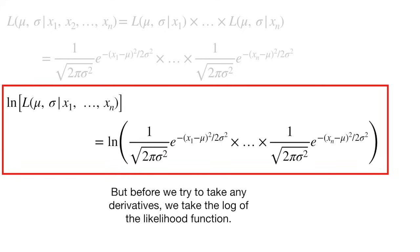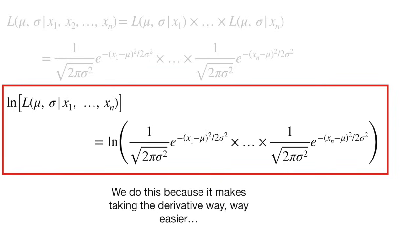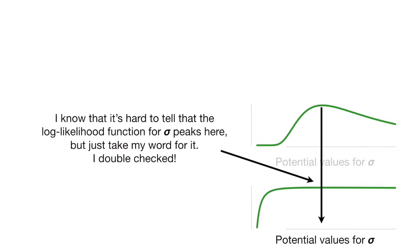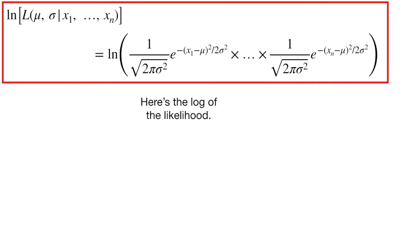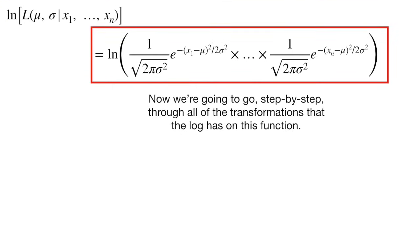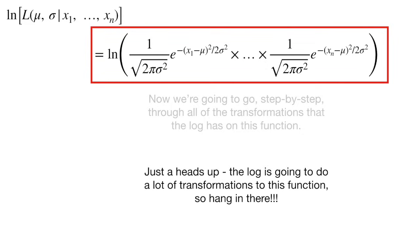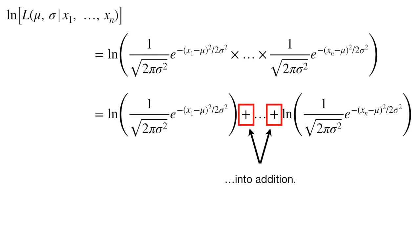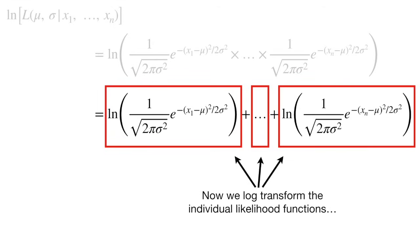What we need to do is take two different derivatives of this equation: one with respect to mu (treating sigma as a constant) to find where the derivative equals zero for the MLE of mu, and one with respect to sigma (treating mu as a constant) for the MLE of sigma. But before taking any derivatives, let's take the log of the likelihood function. We do this because it makes taking the derivative way, way easier. Both the likelihood function and the log likelihood function peak at the same values of mu and sigma. So now we go step by step through all of the transformations the log has on this function.